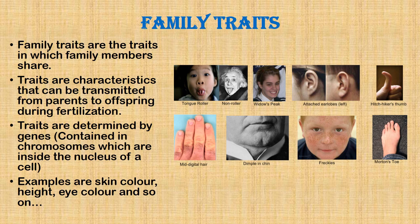Now let's look into the topic proper — family traits. What are family traits? From the word, you can see that family traits are the traits which family members share. Traits are the characteristics that can be transmitted from parent to offspring. This usually occurs during fertilization. Traits are determined by genes, which are contained in chromosomes found in the nucleus of the cell. Examples of traits that can be transmitted from parent to offspring include skin color, height, and eye color.